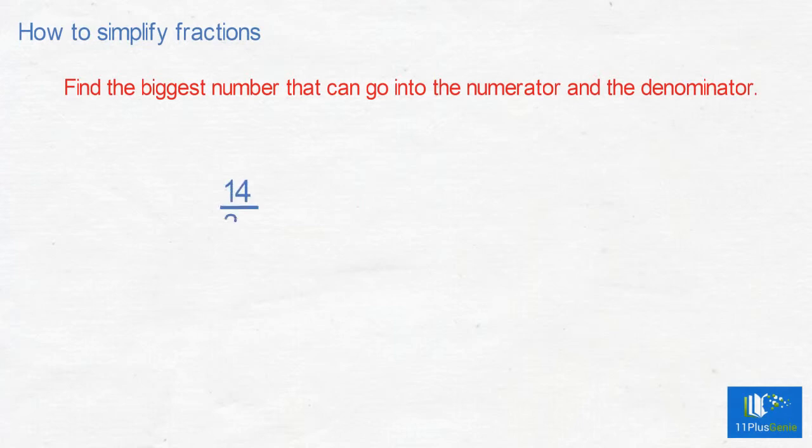14/35. 14 divided by 7 equals 2 and 35 divided by 7 equals 5. So 14/35 equals 2/5.